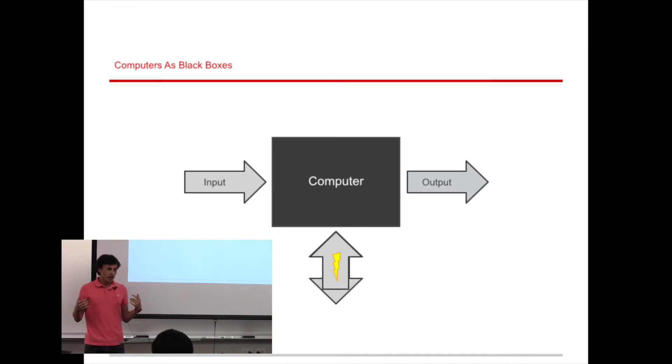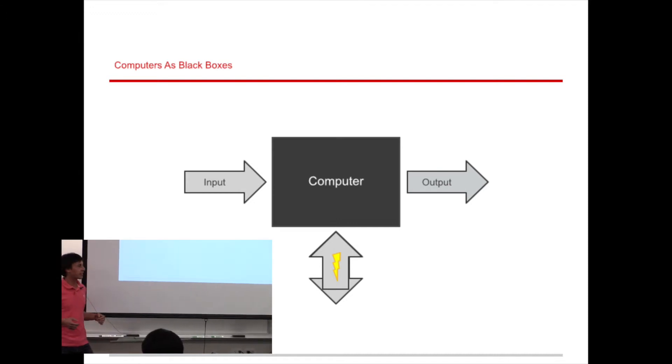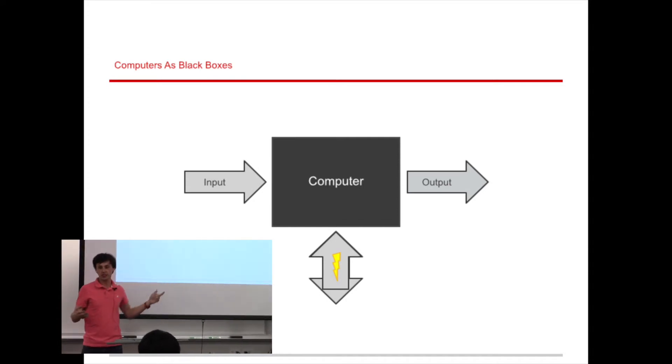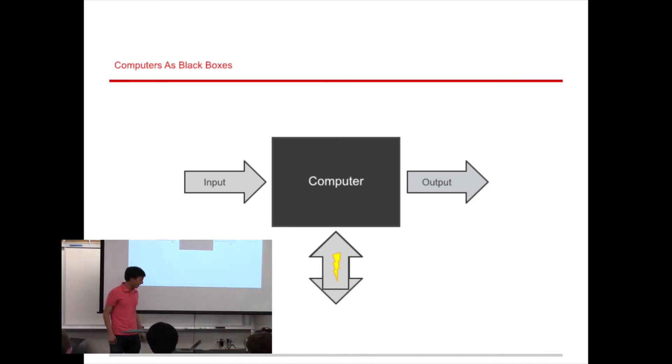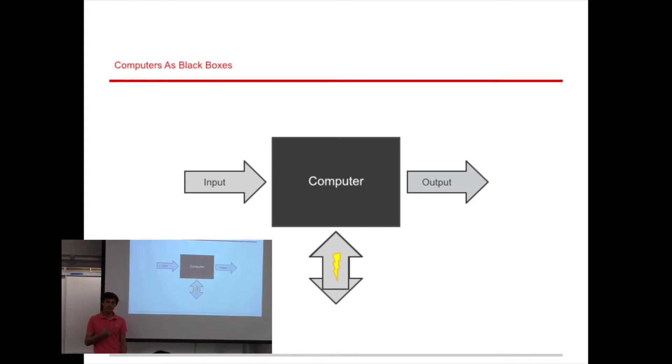So we often think of a computer as a black box with an input and an output, and typically when we're talking about security, we're talking about ways that people can exploit inputs and outputs to get information that they're not supposed to have. But those two aren't the only arrows in your computer. There's also a power cable, which happens to send information in both directions.